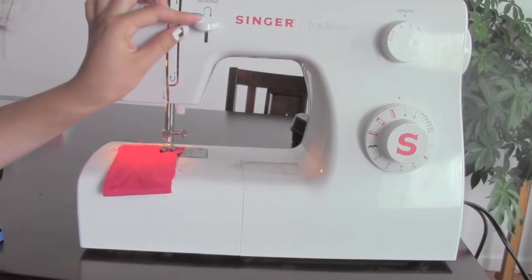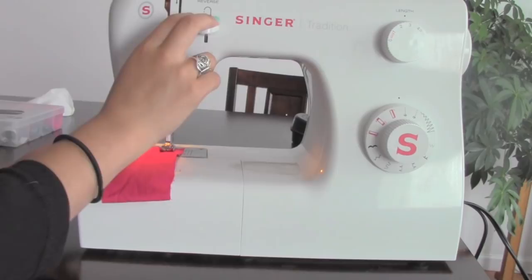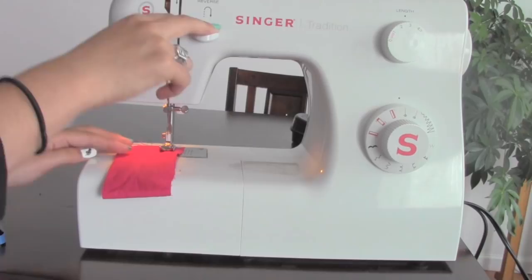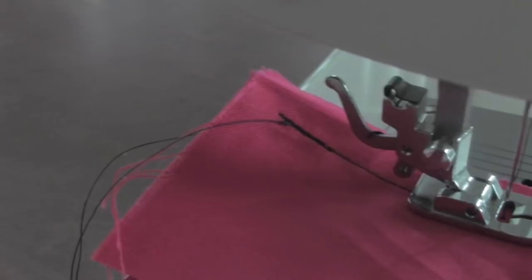To lock your stitches, you're going to press the reverse button at the beginning and the end to keep your stitches in place. So this machine, you need to press the reverse button down while using the foot pedal so it can work. So it's going backwards. Now that you've locked your stitch, you can continue on down.